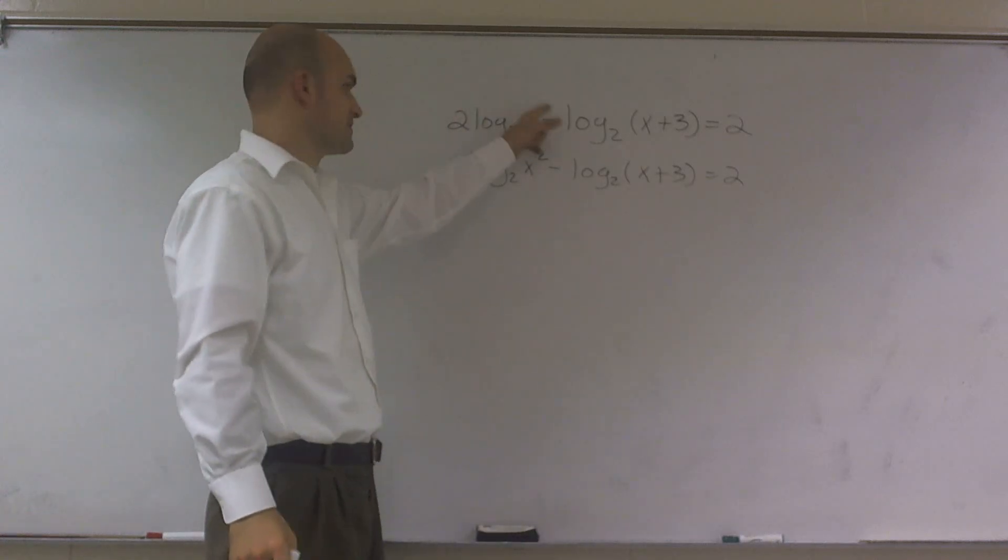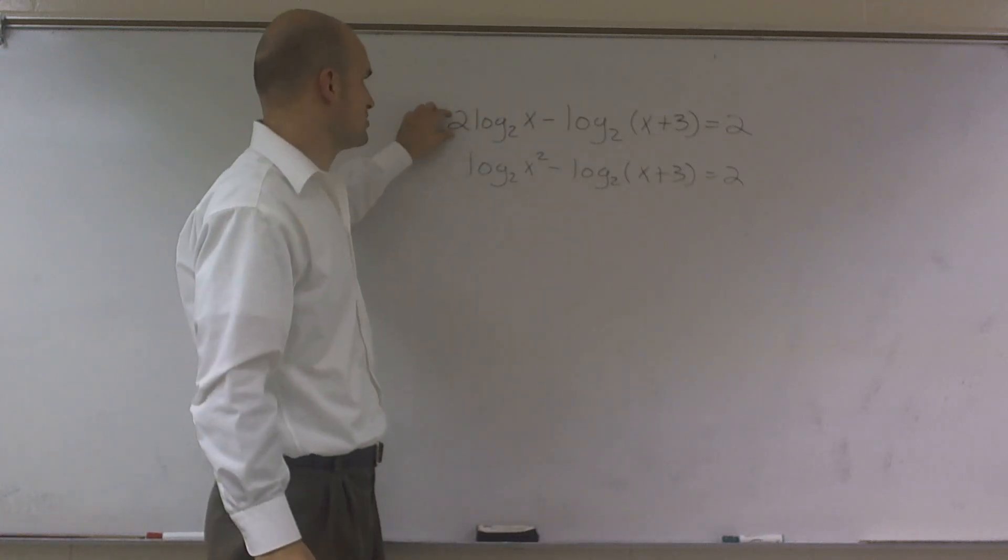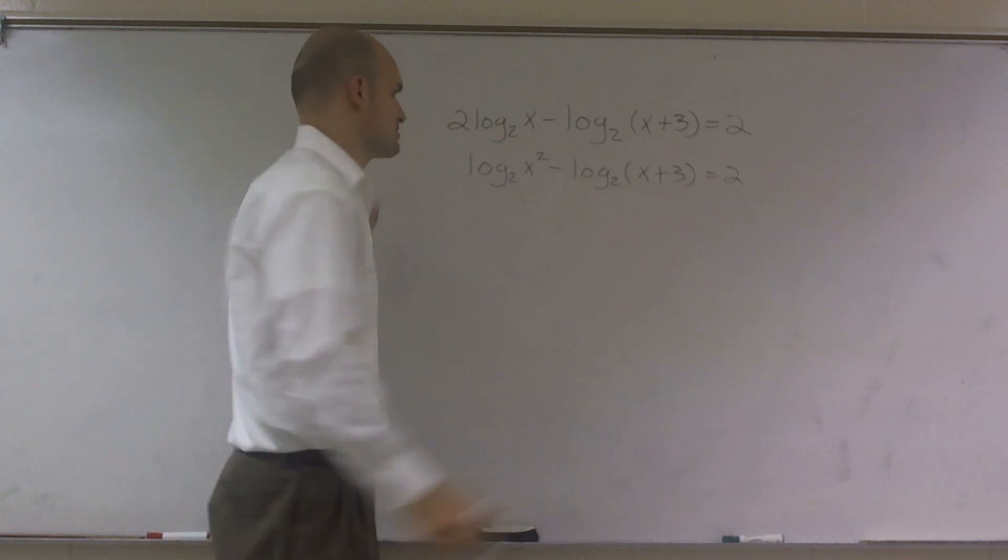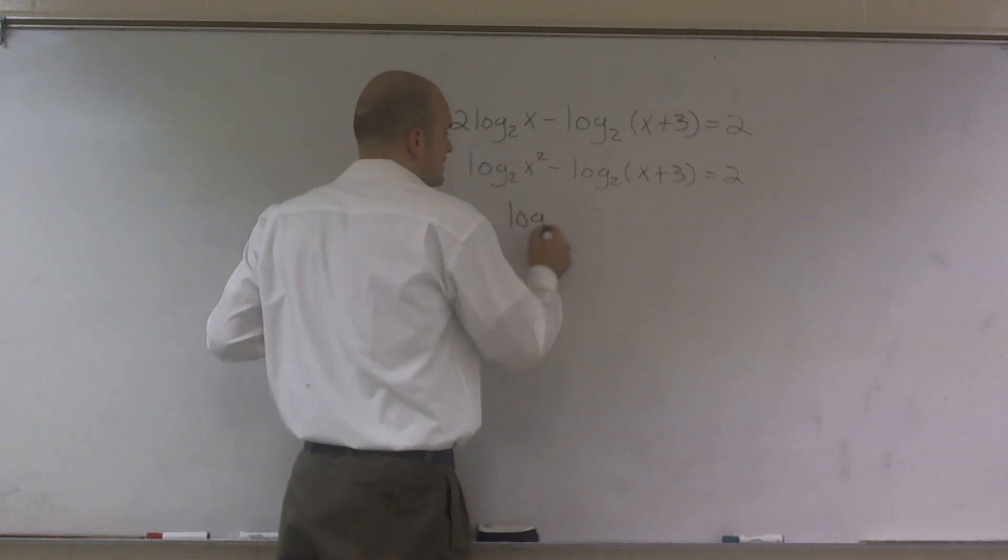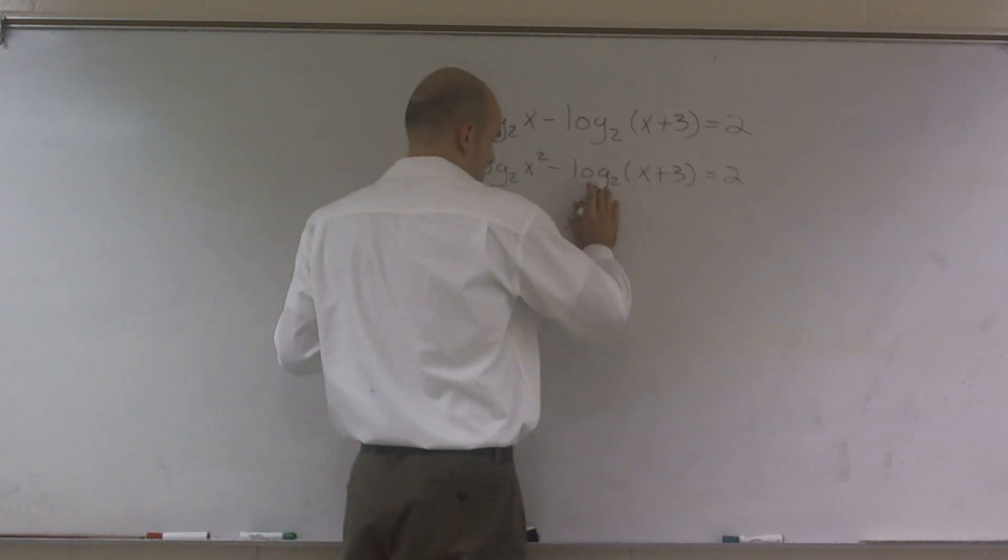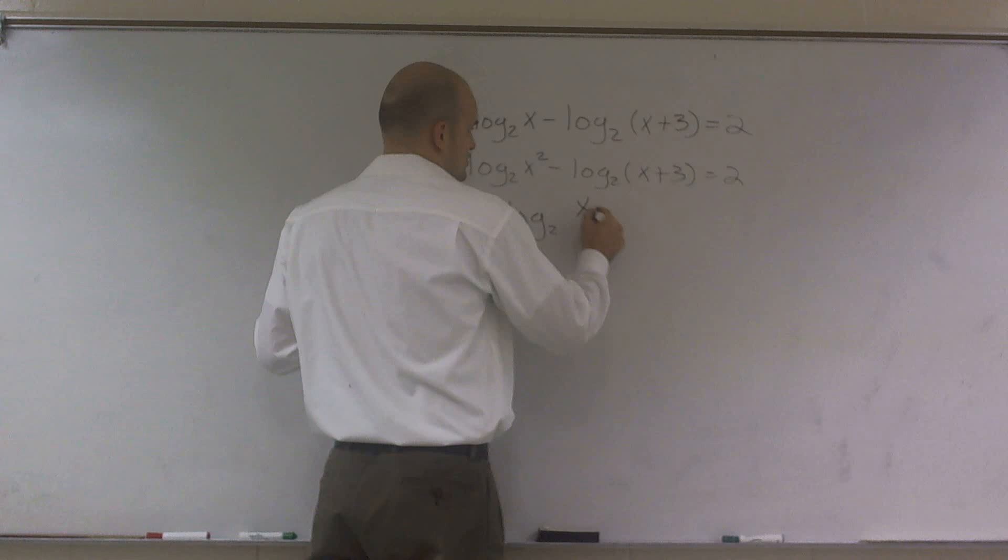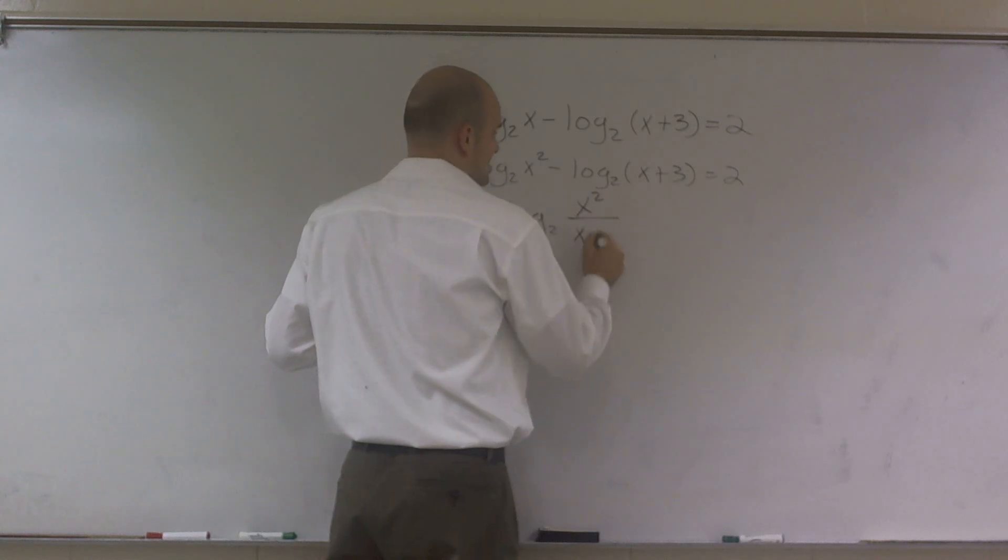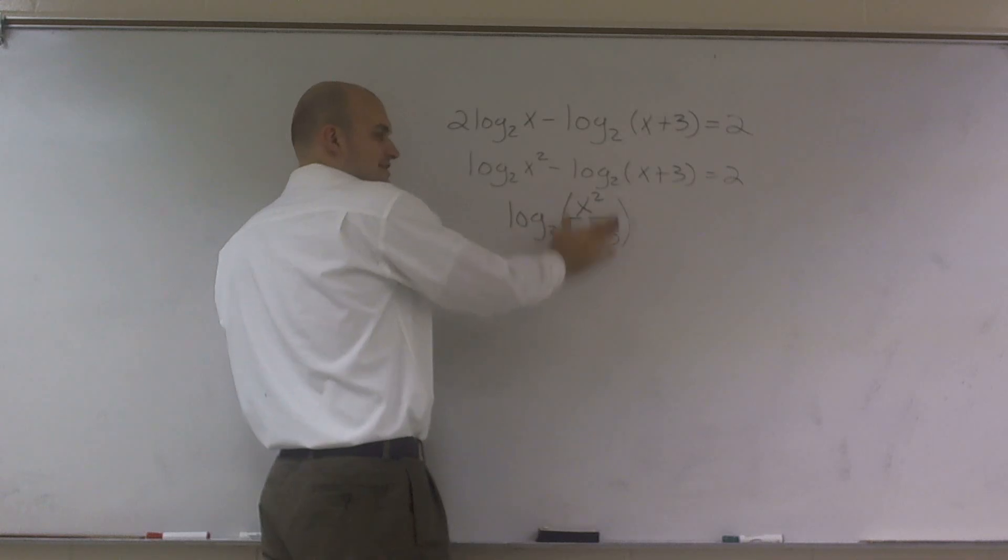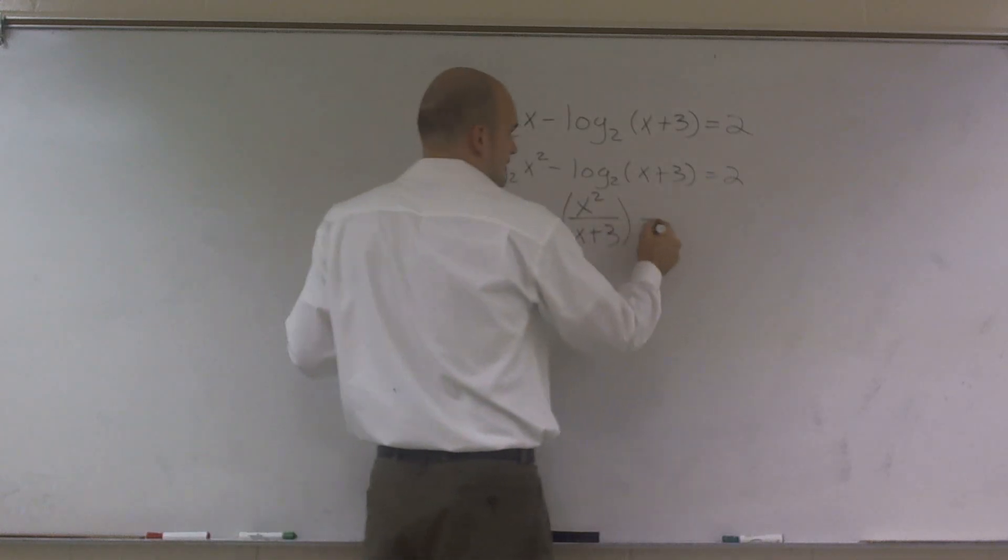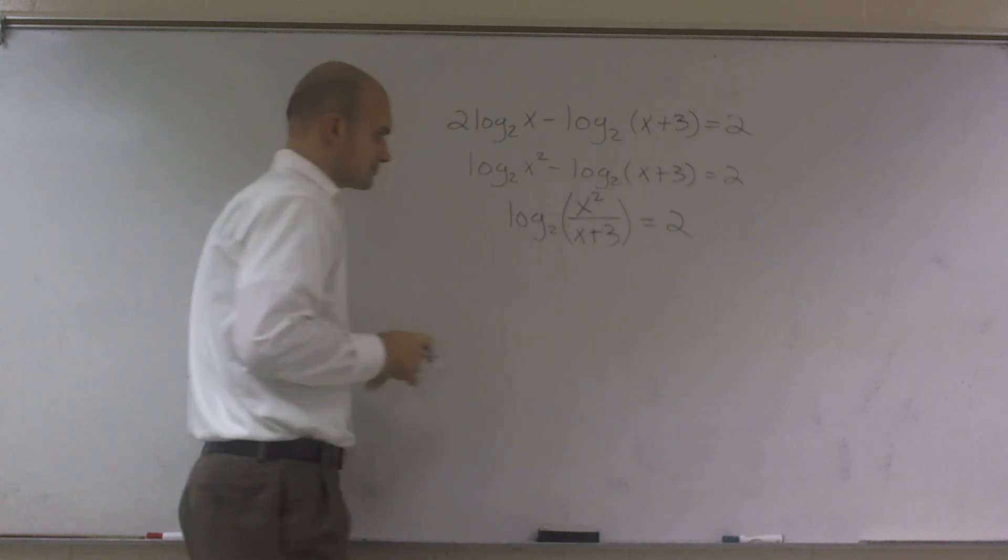That's another property of logs that you can take your multiplier and put it back as a function. So now I'll rewrite this as log base 2 of x squared. Let's change this around a little bit. As x squared all over x plus 3. So now I'm taking the function of both of these combined divided equals 2.